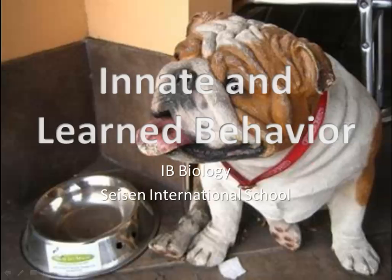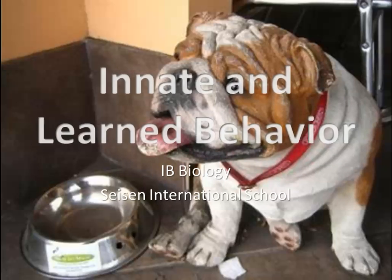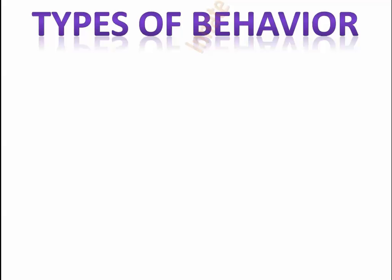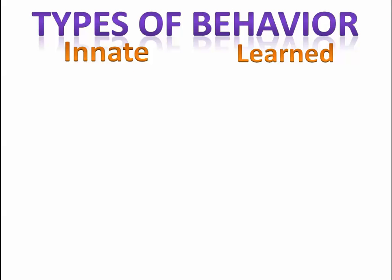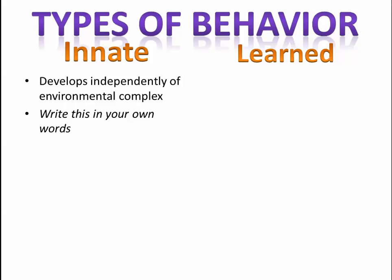We're going to take a look at innate versus learned behavior, and we're going to use several examples to help us understand this. Innate is stuff that you're born with — it's that nature idea. So your abilities to do certain things when you're born, independently of the environmental context.